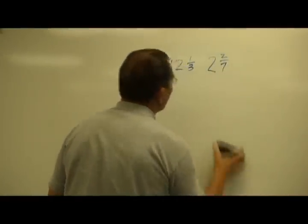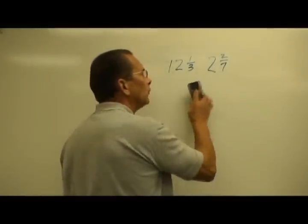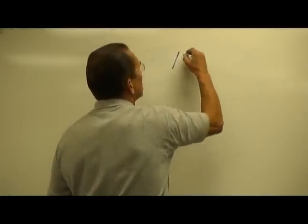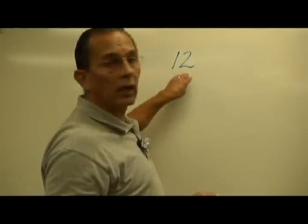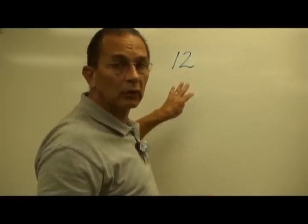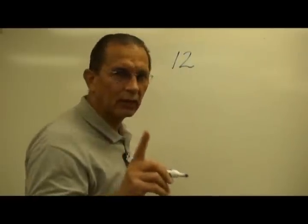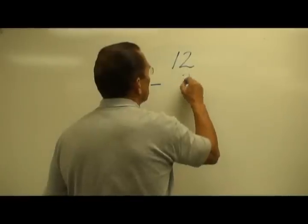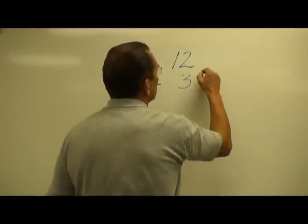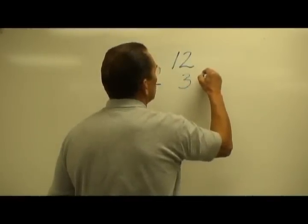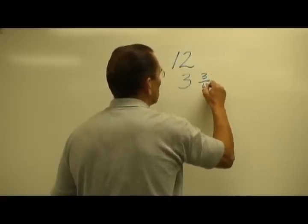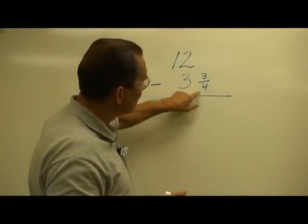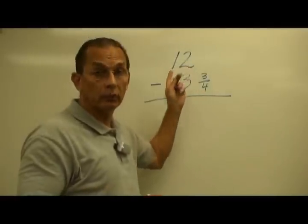So I'm going to show you subtraction of a whole number, and we're going to subtract a mixed number from it. When I put the problem up, three-fourths. So I have 12, my whole number, and I'm subtracting my mixed number, three and three-fourths, from 12.